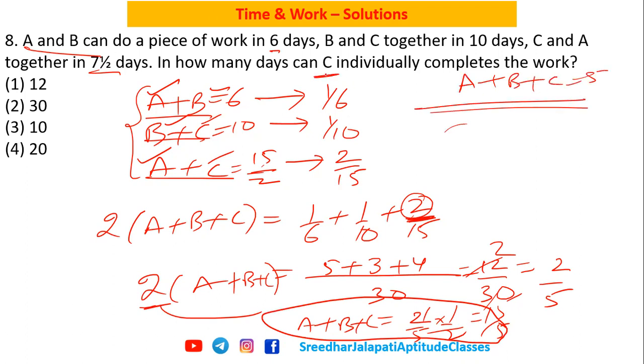But now the question is not how many days all together take. The question is how many days C alone takes. So to get C from all together ABC, I have to subtract AB together. But subtraction is not of days, subtraction is of rate of work.